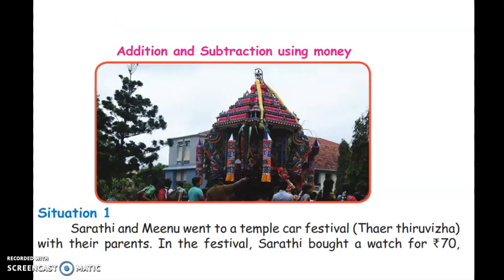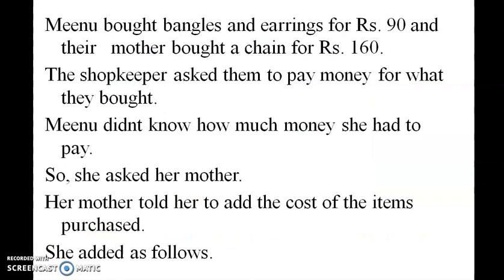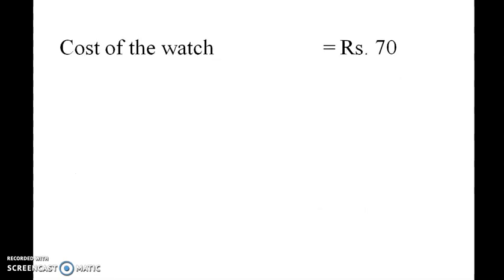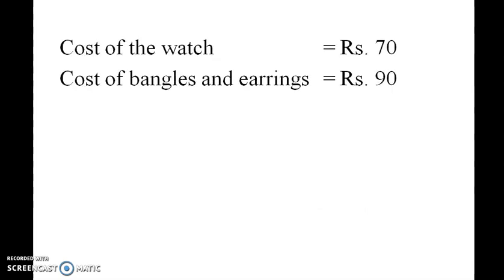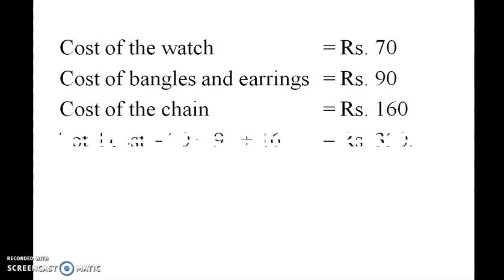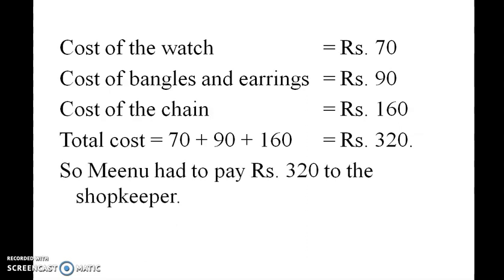Addition and subtraction using money. For example, Sardhi and Meenu went to a temple car festival. Sardhi brought a watch for 70 rupees, Meenu brought bangles and earrings for 90 rupees, and mother brought a chain for 160 rupees. The total cost can be found: you had to pay 320 rupees to the shopkeeper.